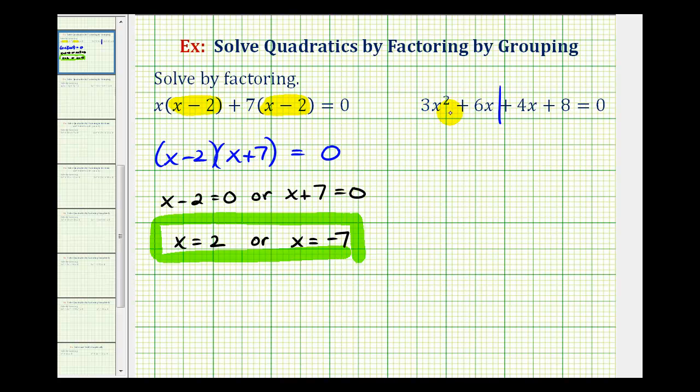So the greatest common factor of 3x squared plus 6x would be 3x. So we'll factor out 3x from the first two terms, leaving us with x plus 2. And then the greatest common factor of 4x and 8 would be 4. So we'll factor out a positive 4. So we'll put plus 4. That will leave us with a factor of x plus 2. And this still equals 0.